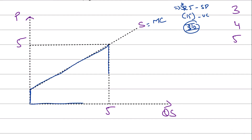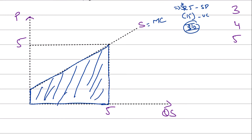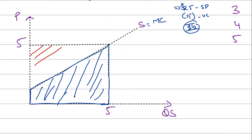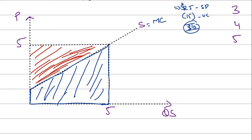If you deduct the total marginal cost — which is the area under the supply curve and equals your total variable cost — from total revenue, you get the producer surplus shown by the red area on the diagram. Producer surplus is defined as the amount producers are paid less the total variable cost of production. The area under the supply curve up to five units represents the sum of marginal costs for each additional unit, and the red area is the producer surplus.